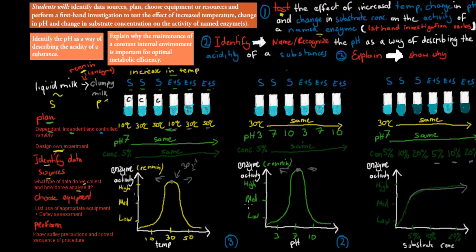That was the overall idea of the experiment. You should also know the step-by-step procedure for how you did this experiment, and you should know the safety concerns. For example, you used heating elements to change the temperature, and you might have hurt yourself with those. You might have used acid when changing the pH, which could be problematic. You should also know safety precautions to minimize the risk. Because of the verbs — perform, choose equipment, identify data sources, and plan — you need to know quite a bit of detail about this experiment.